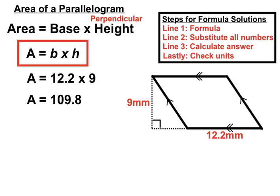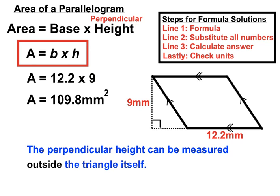Get a final number, answer of 109.8. Let's have a think about the units. We are using millimeters in the actual question. And because it's an area question, we're looking to use square units. So it'll be square millimeters that we'll be using. So don't be concerned that the perpendicular height is being measured outside the triangle itself. That's okay. Let's go with it.